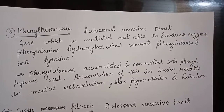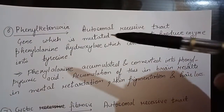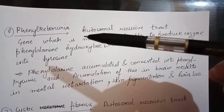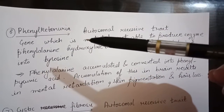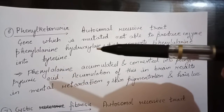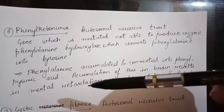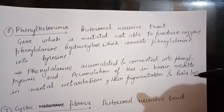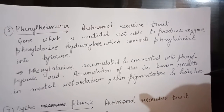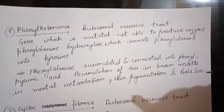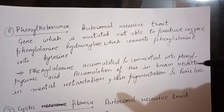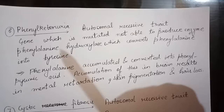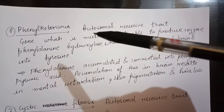Next we will study about phenylketonuria. This genetic disorder results in mental retardation, skin pigmentation, and hair loss. It is also an example of a pleiotropic gene, as you have studied in the pleiotropic genes topic.